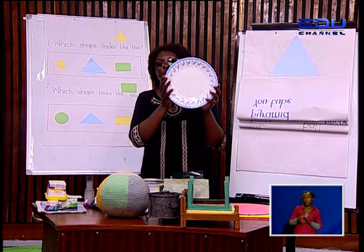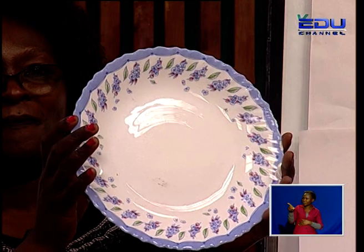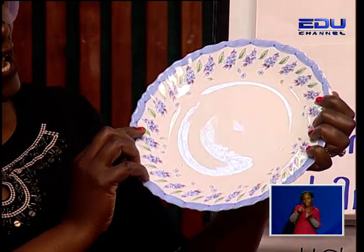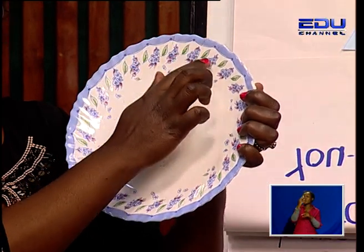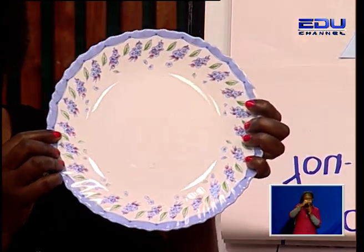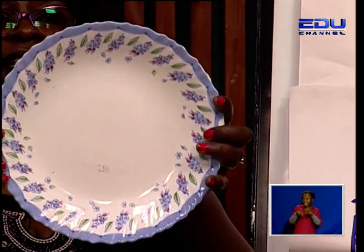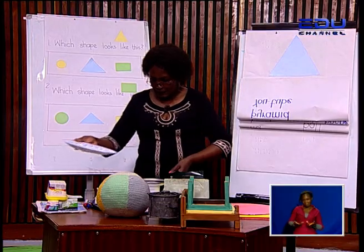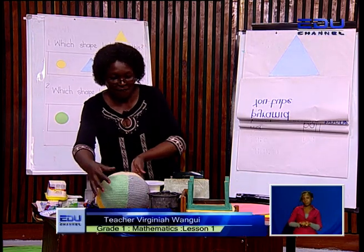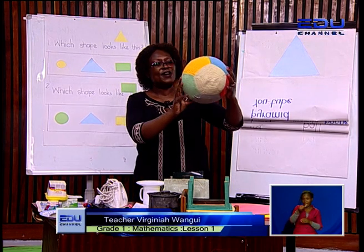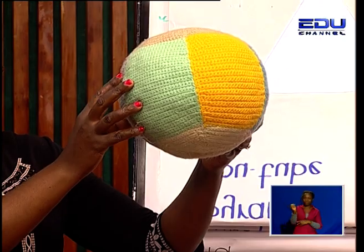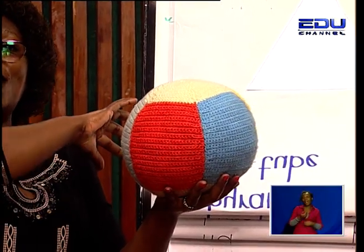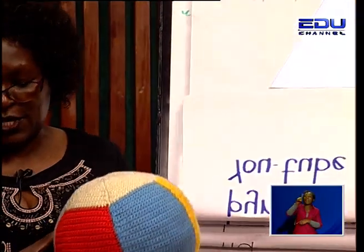Do you know what this is? This is a plate. My plate has very beautiful flowers all round it. A plate is also round in shape. I have a very beautiful ball — this ball has different colors. My ball is also round in shape.